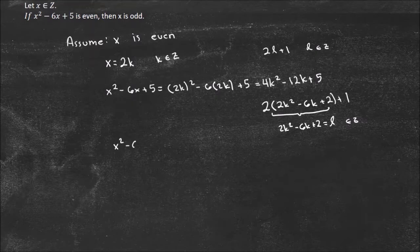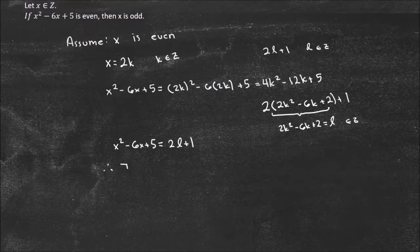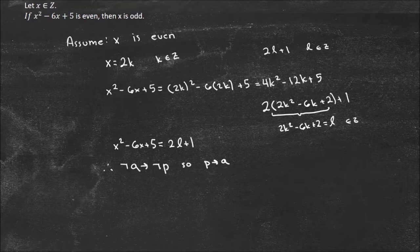So now I can say X squared minus 6X plus 5 is equivalent to 2L plus 1, and therefore it's odd. So therefore, not Q implies not P. So P implies Q based on logical equivalence, and therefore my proof is done, because I've shown that it's odd. You can use the contraposition — we were able to assume not Q and show that implies not P, and that lets us show the entire logical statement is true.